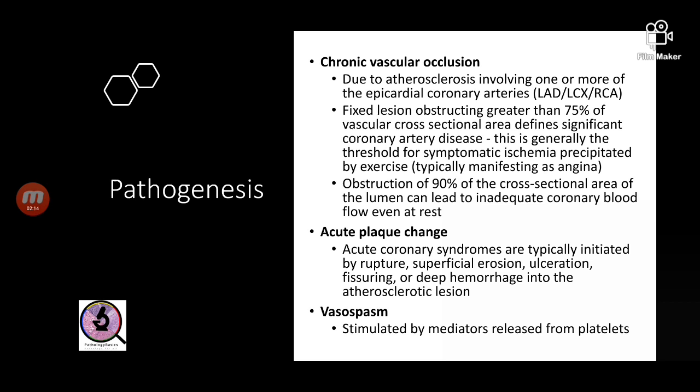If there is a lesion obstructing greater than 75 percent of the cross-sectional area of the vessel it leads to coronary artery disease — this is the threshold after which ischemia precipitates. Initially ischemia is seen after exercise as myocardial demand increases, leading to angina. If there is obstruction of more than 90 percent of the cross-sectional area it can lead to angina even at rest.